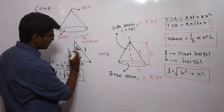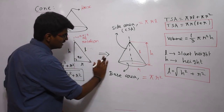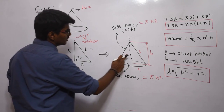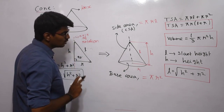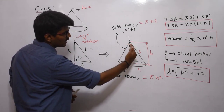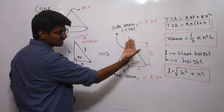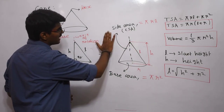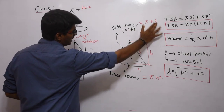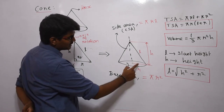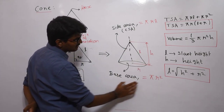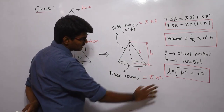Once after rotating it completely, it gets converted into a cone. There are two areas for a cone: one is the base area and one is the curved area, which is the side area. The side area is given as πRL, where R is the radius and L is the slant height, and the base area is given as πR².